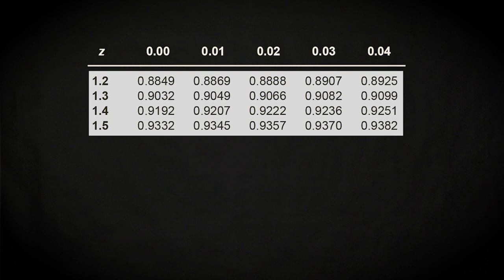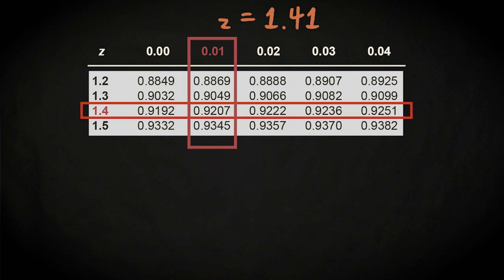Using such a table, you can, for a given value of Z, quickly find the associated cumulative probability. For example, if you'd have to find a cumulative probability for a Z-value of 1.41, you would select the value of 1.4 in this margin and 0.01 in this, and find the corresponding probability of 0.92.